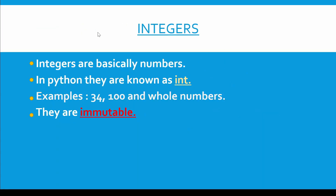Integers are basically numbers. In Python they are known as int, so int is the data type name for integers. Examples are 3400 and other whole numbers, and they are immutable. Immutable means that once they are assigned, they cannot be reassigned. So let's open VS Code and explore integers.